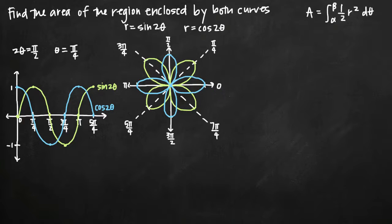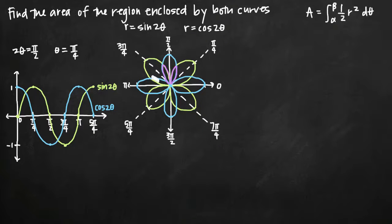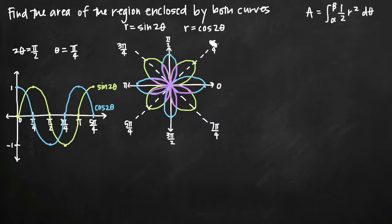Now we realize that the area enclosed by both curves consists of these overlapping petals — each petal where the two curves overlap. There are 2 of them in each quadrant of our polar coordinate system, meaning 8 in total. Now that we know what the region looks like, we need to use our area formula to find the area.